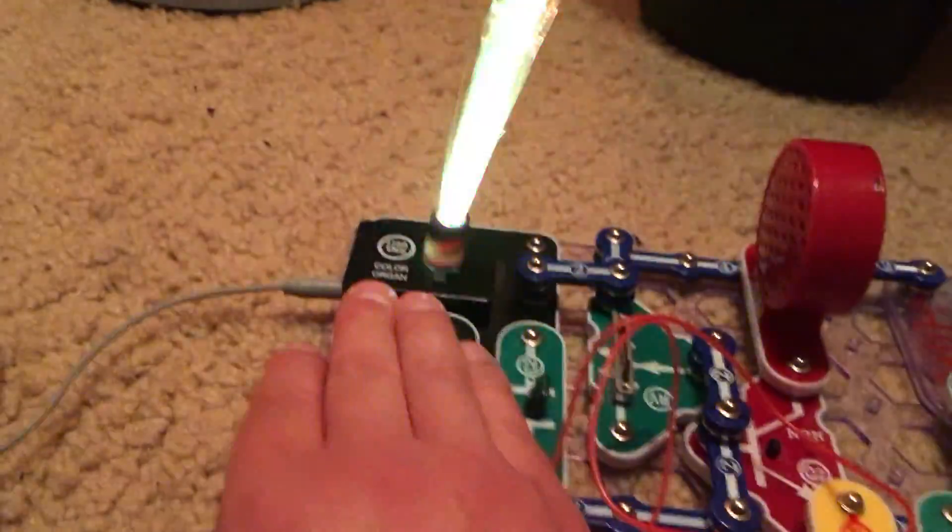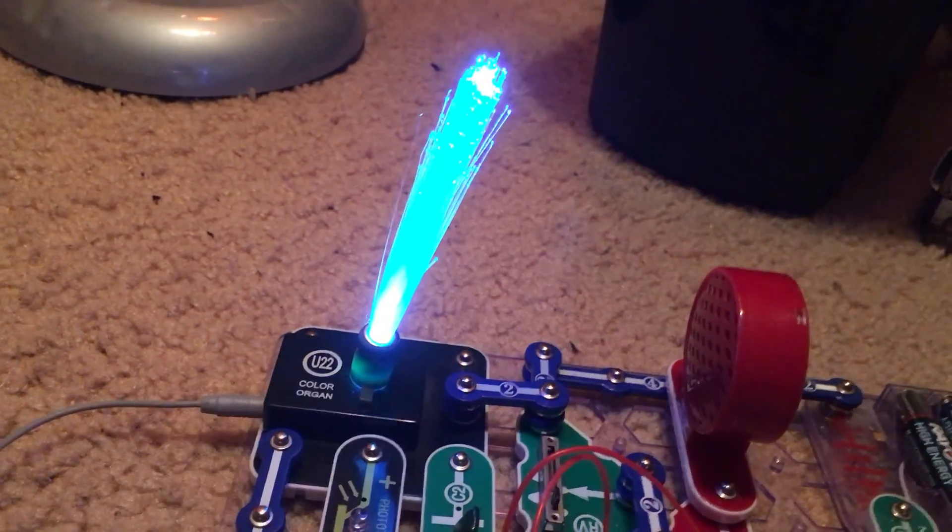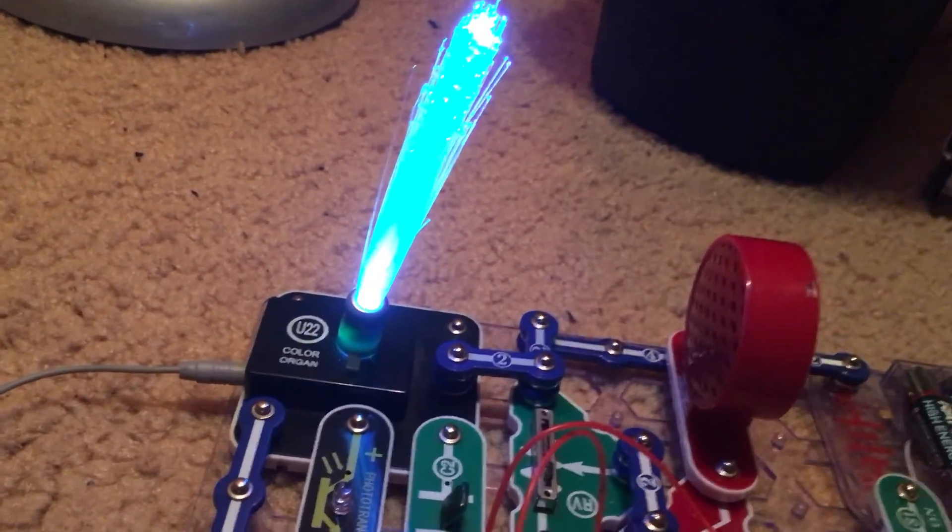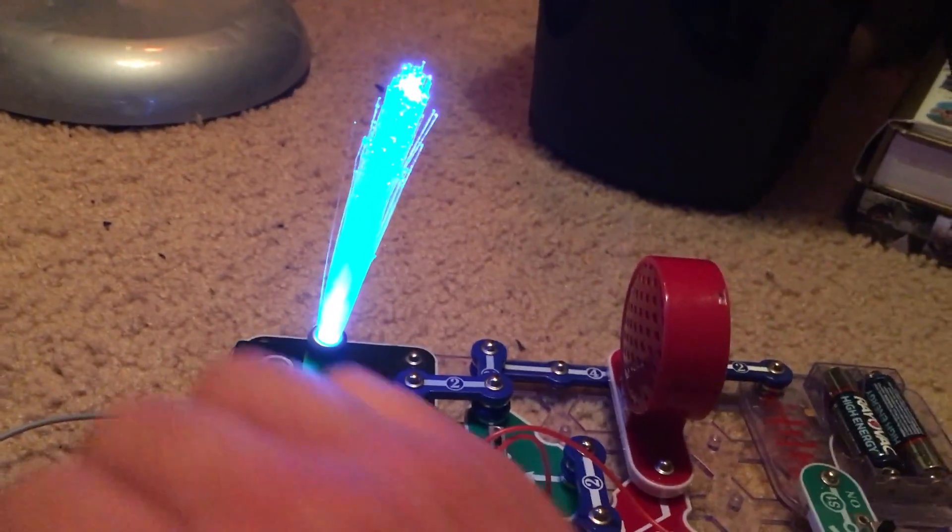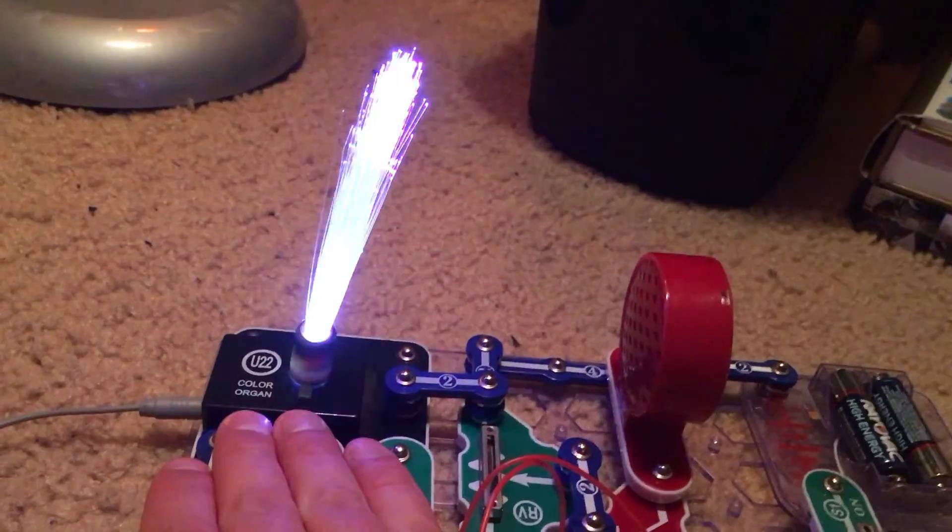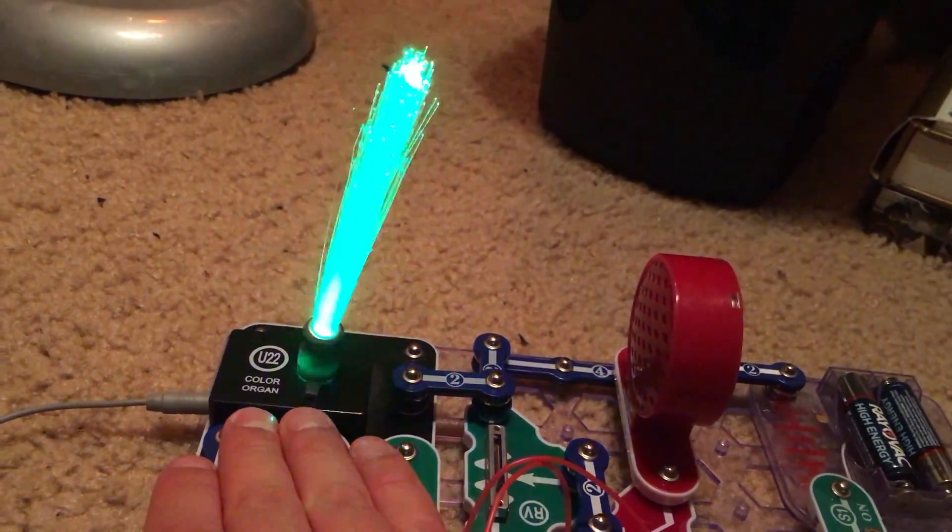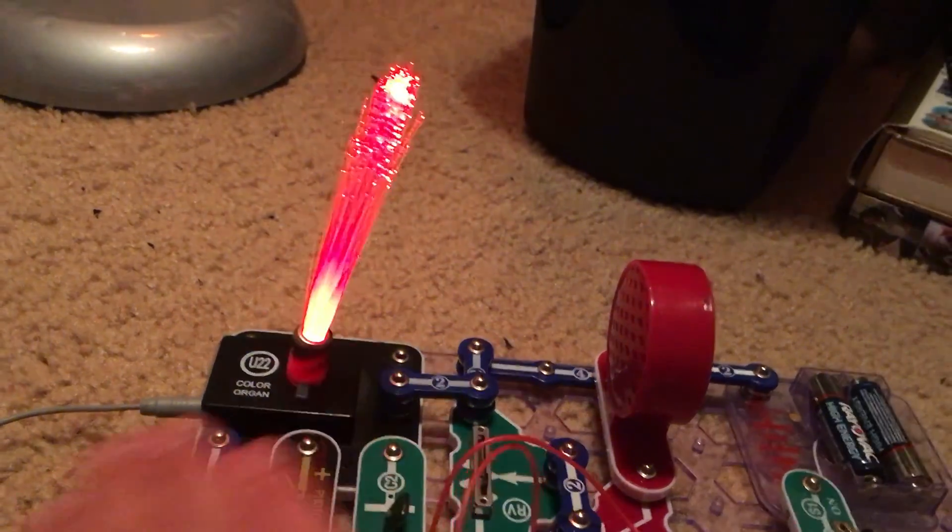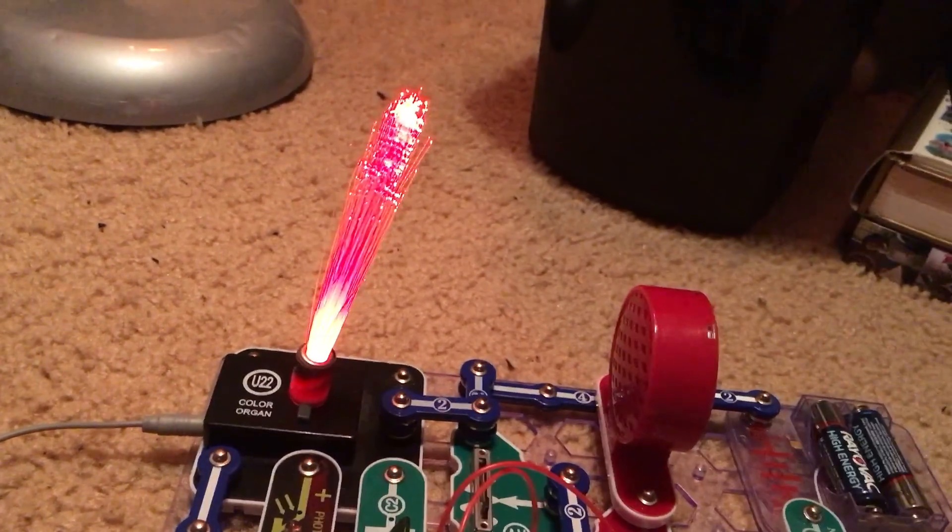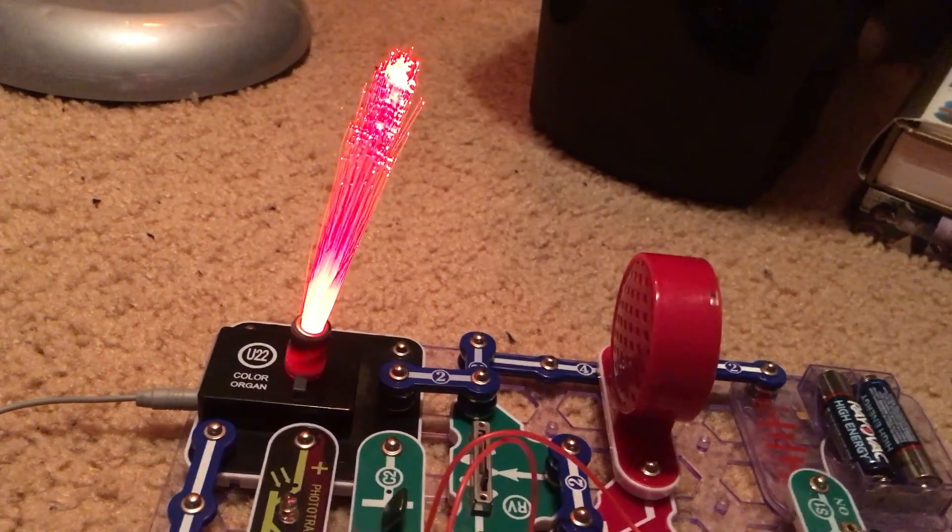But watch what happens when I uncover the phototransistor. It just stays on one color, which is cyan, I think. Now, when I cover the phototransistor again, the LED will begin changing patterns again. Uncover it. Now, it will stay red. The color pattern stops.